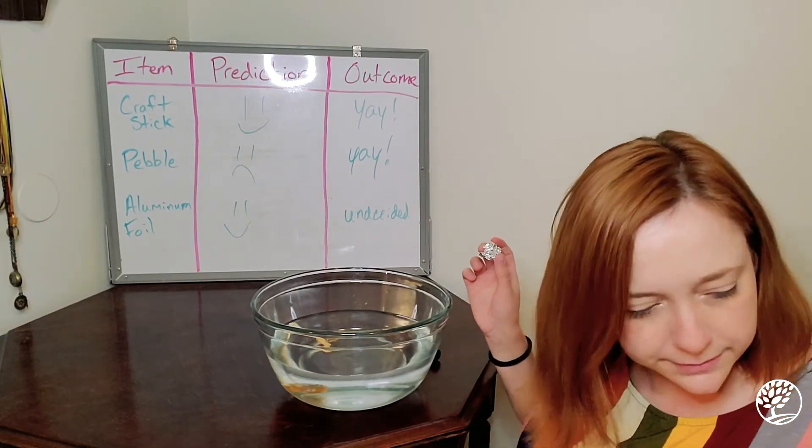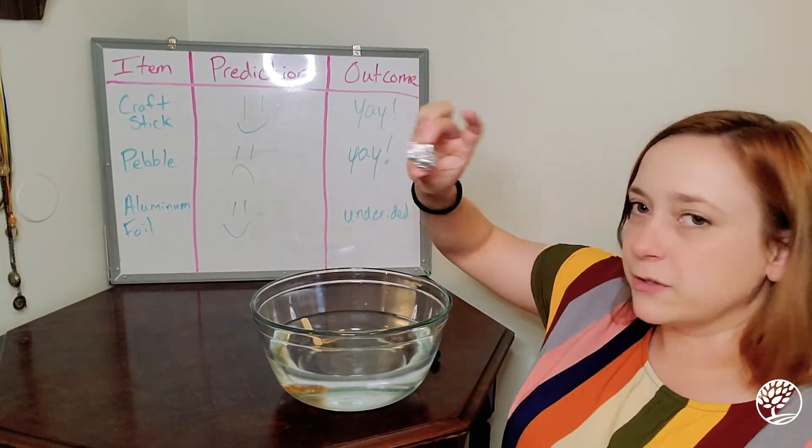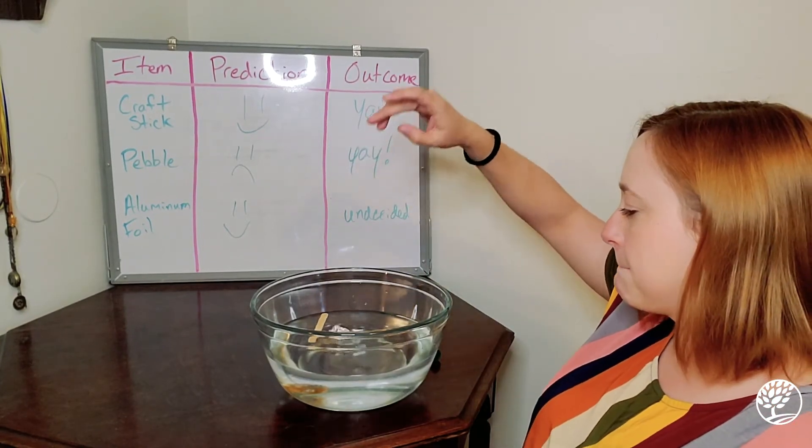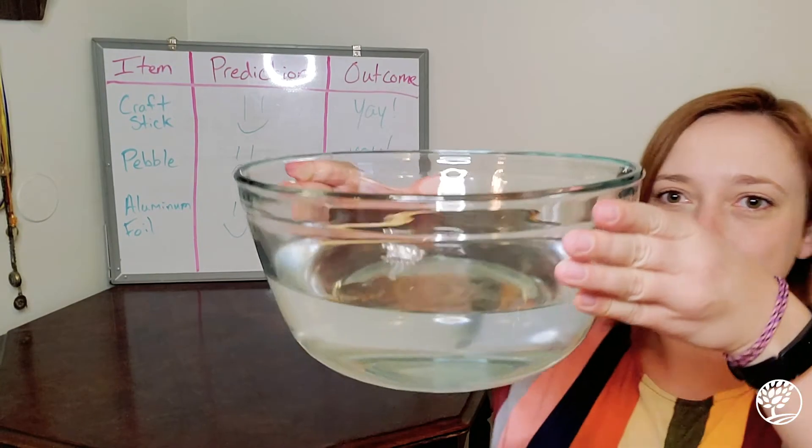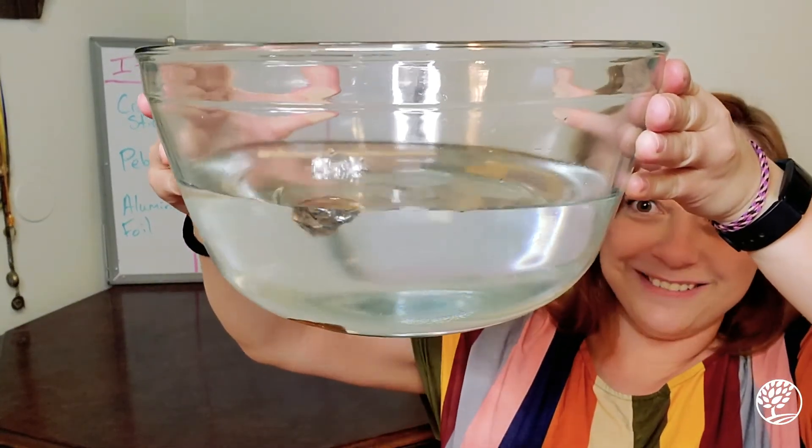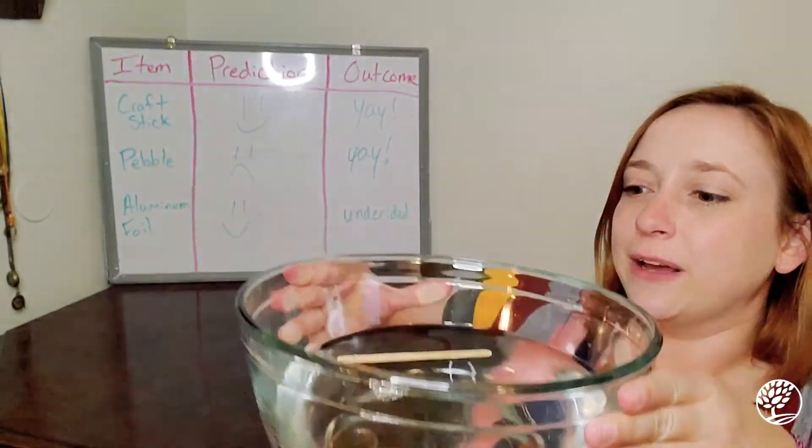Okay, so we have our crumpled piece of foil. Let's try it. That one is floating all the way.